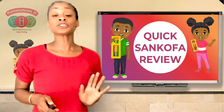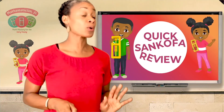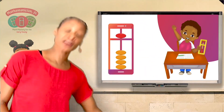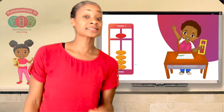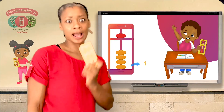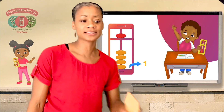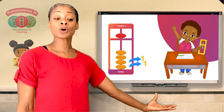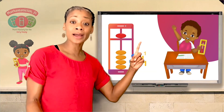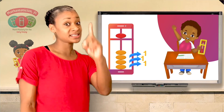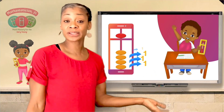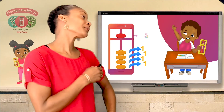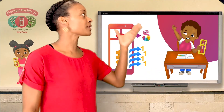Let's do a quick Sankofa review — let's look at our junior counter. This is so important when it comes to counting, adding, and all that good stuff. Let's remember: lower beads — each lower bead counts for one. The value of each lower bead is one, like one dollar. But the upper bead, on the other hand, is worth more.